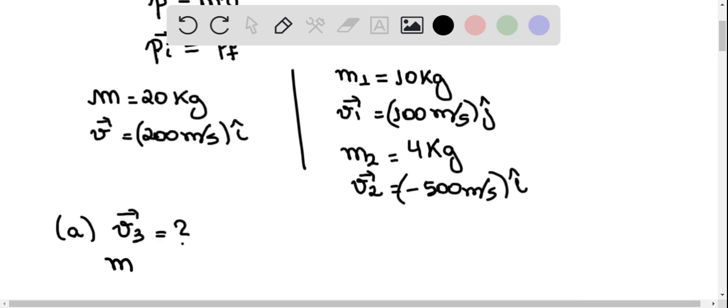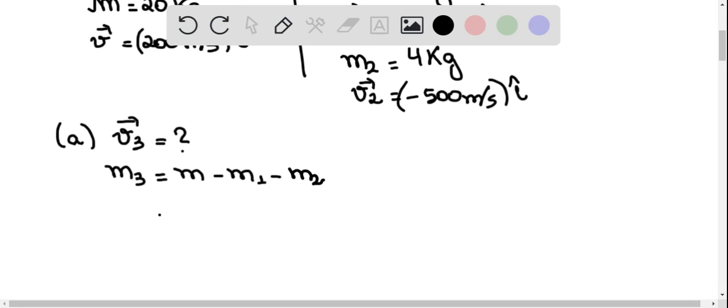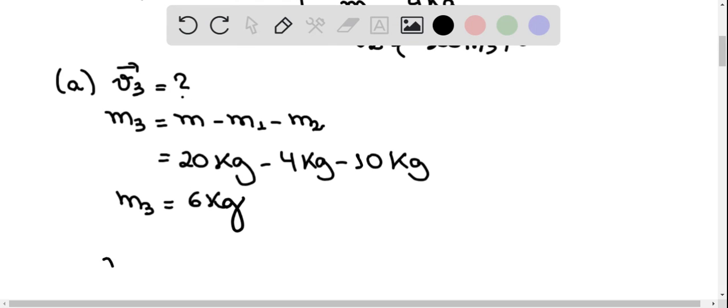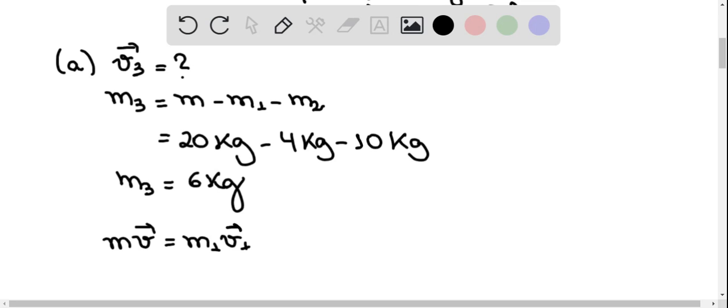Okay, so we have that mv is equal to m1v1. So mv is the initial momentum, and the final momentum is m1v1 plus m2v2 plus m3v3.